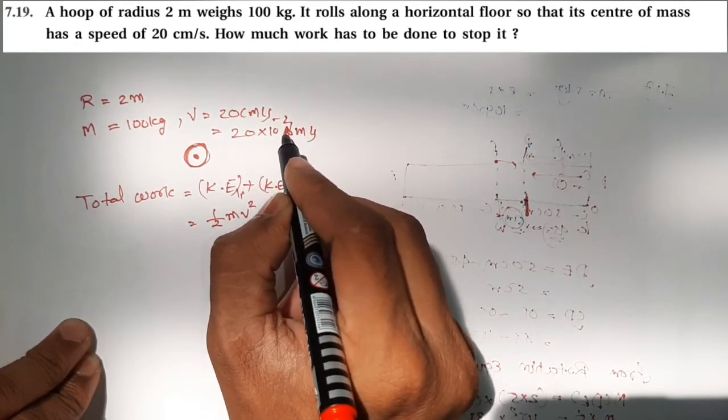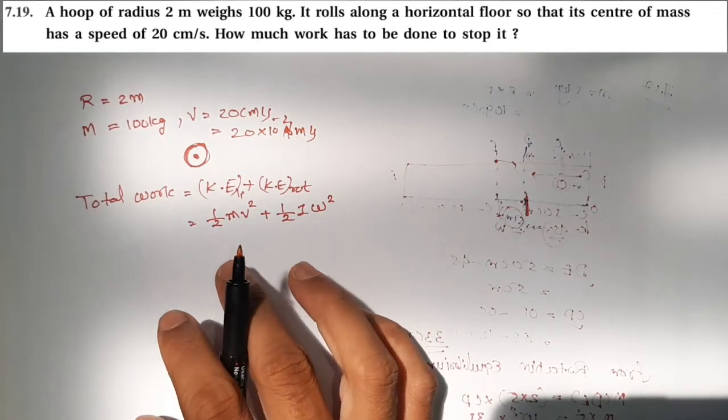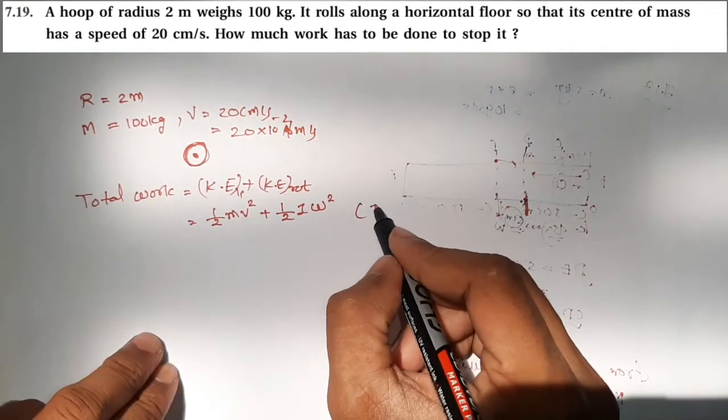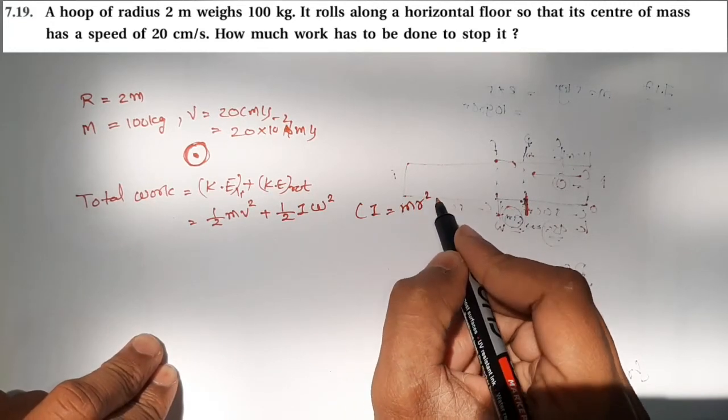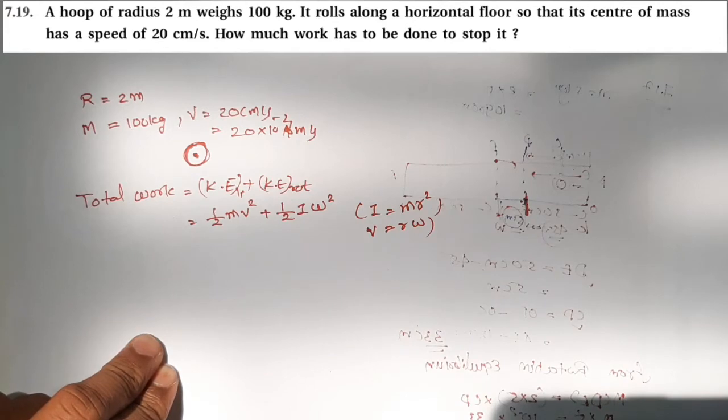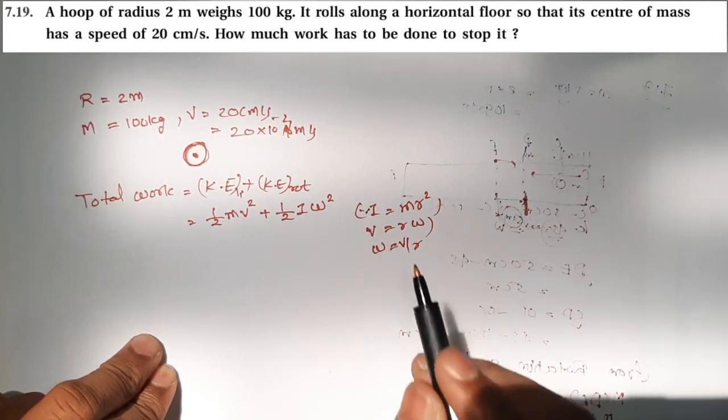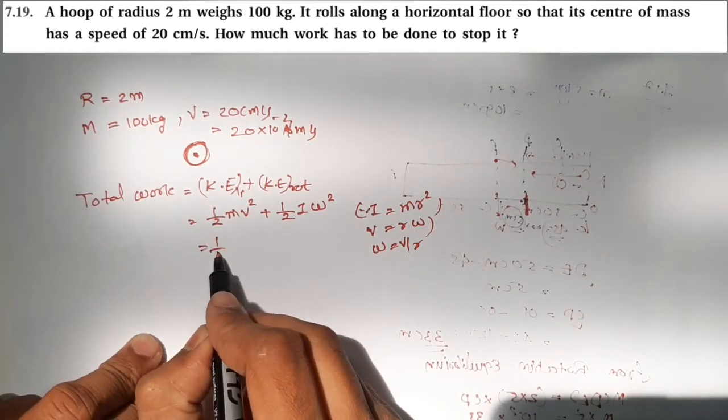We need I and omega. Omega equals v by r. This is how we write it: omega equals v by r.